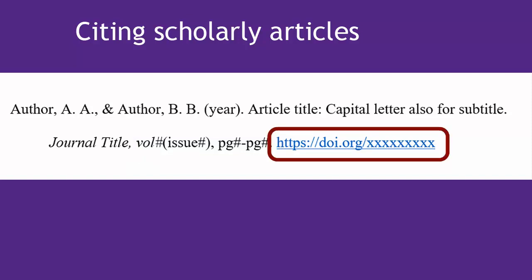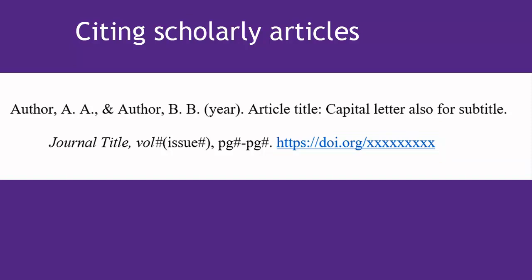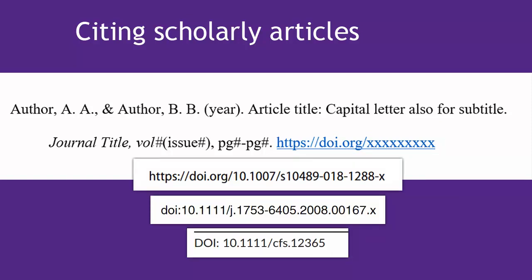The DOI is a unique string of numbers and letters that points to just this one article. Here are a few examples of DOIs from various articles. If there truly is no DOI, you can just leave it off, but most modern scholarly articles will have one, so look around for it.